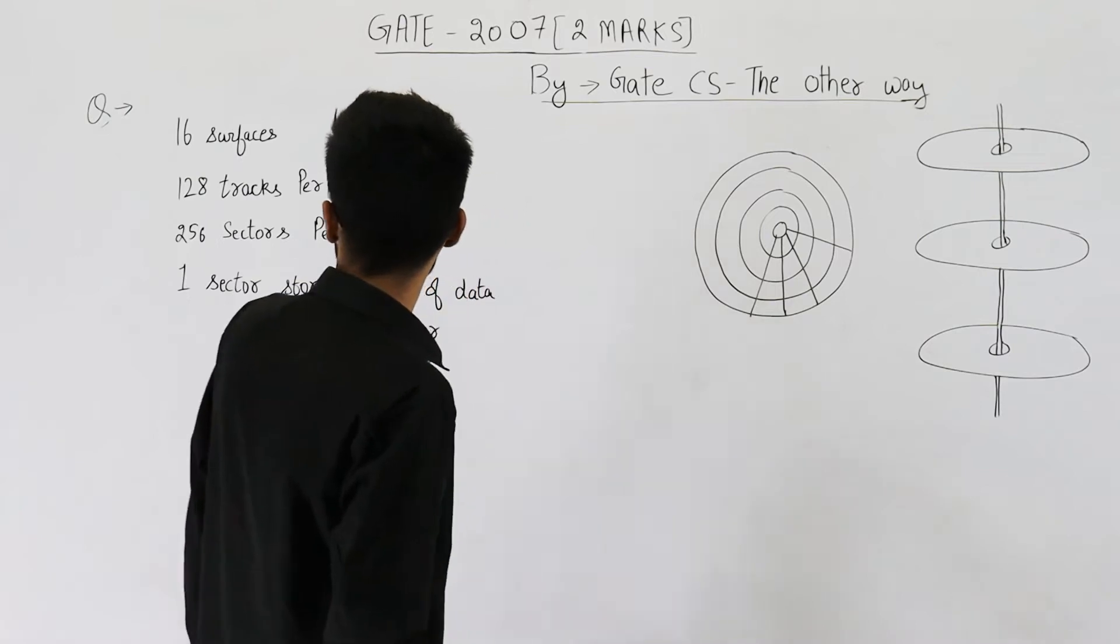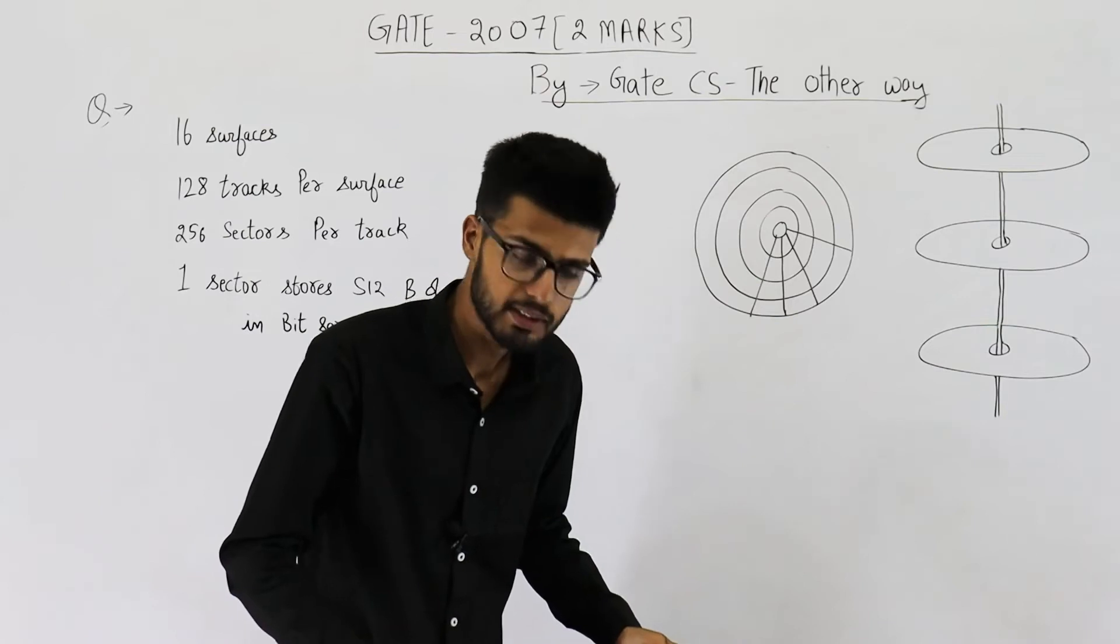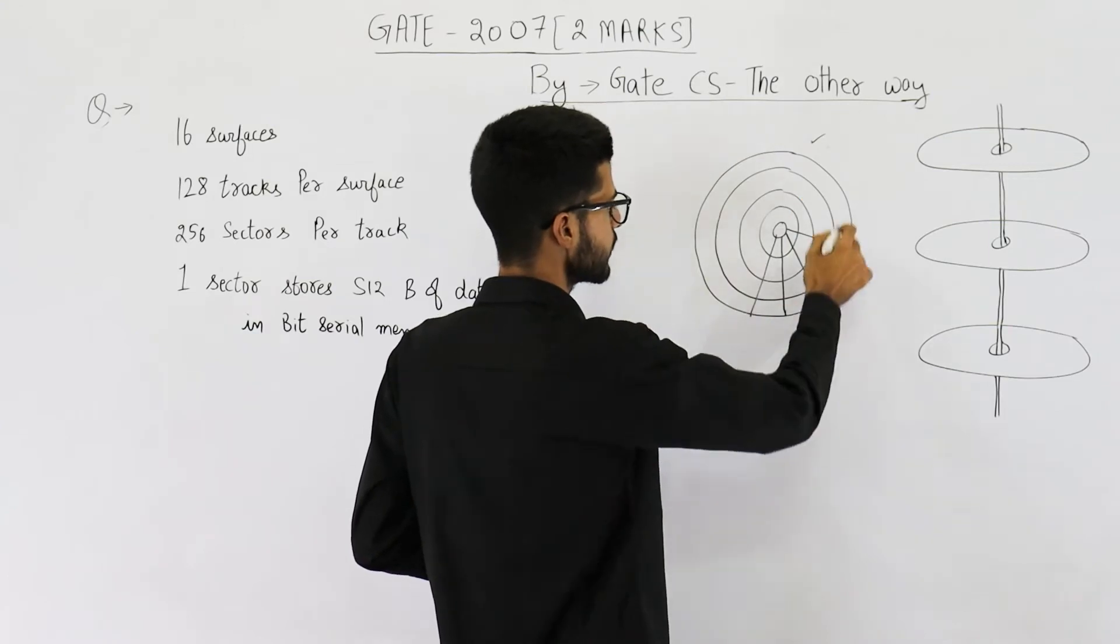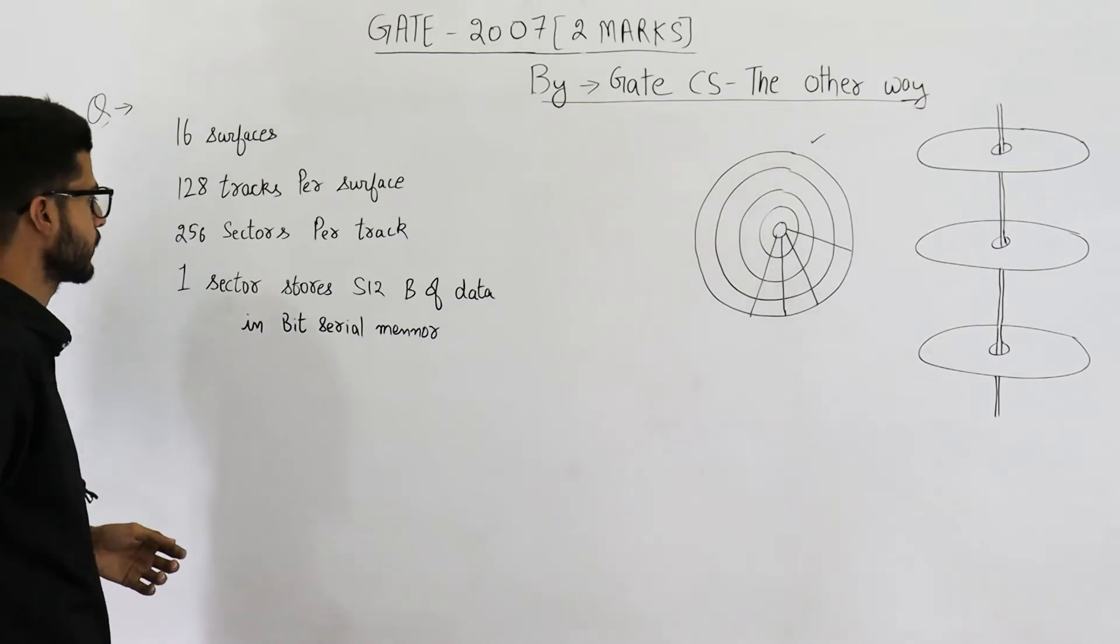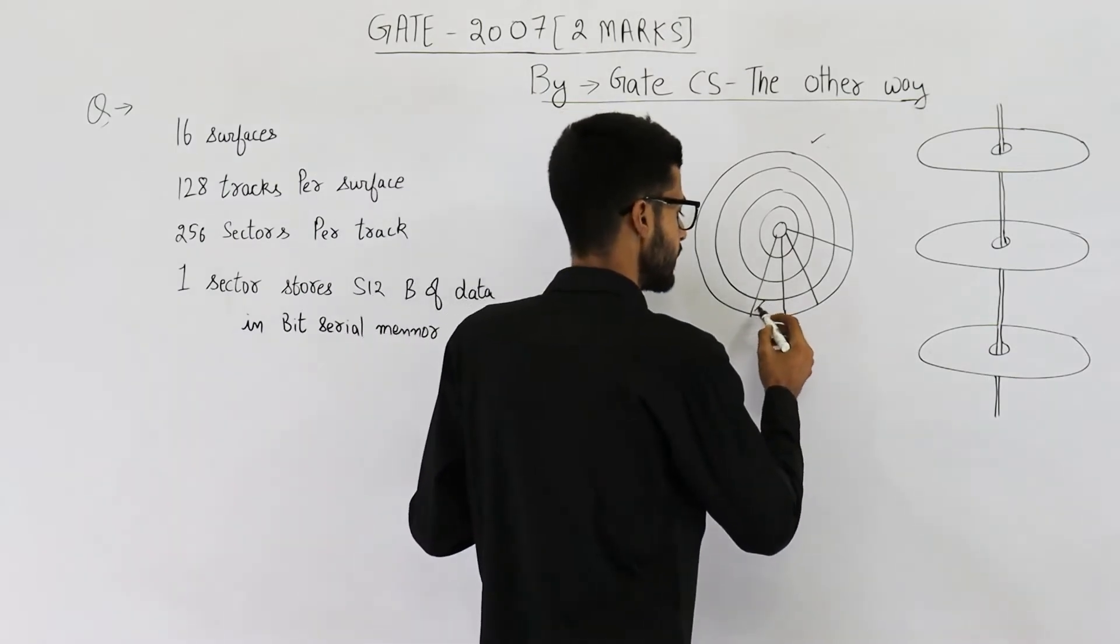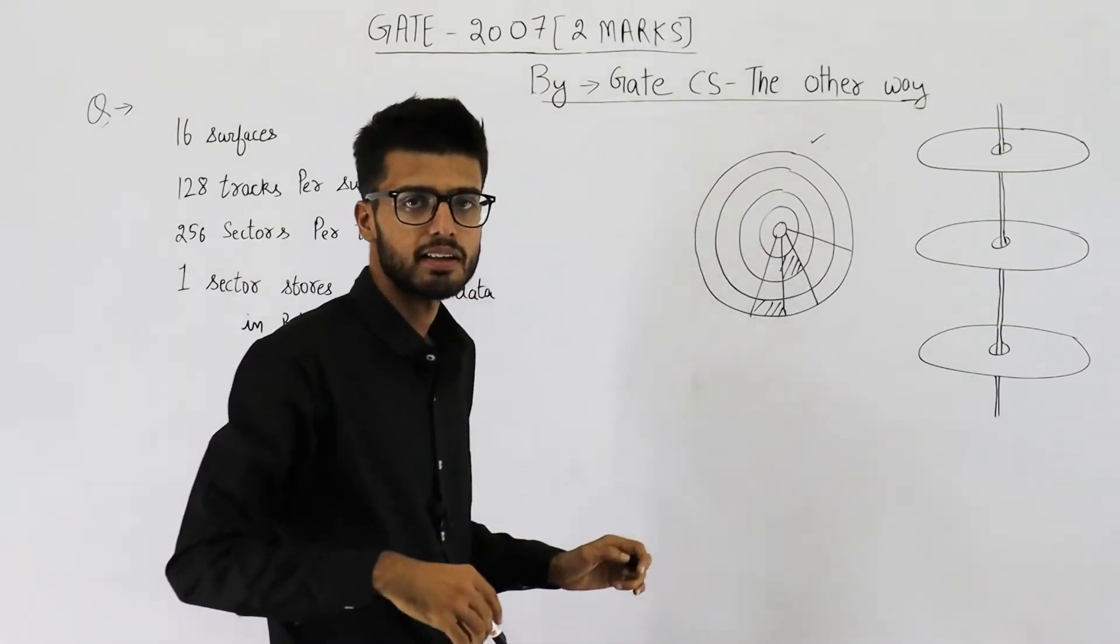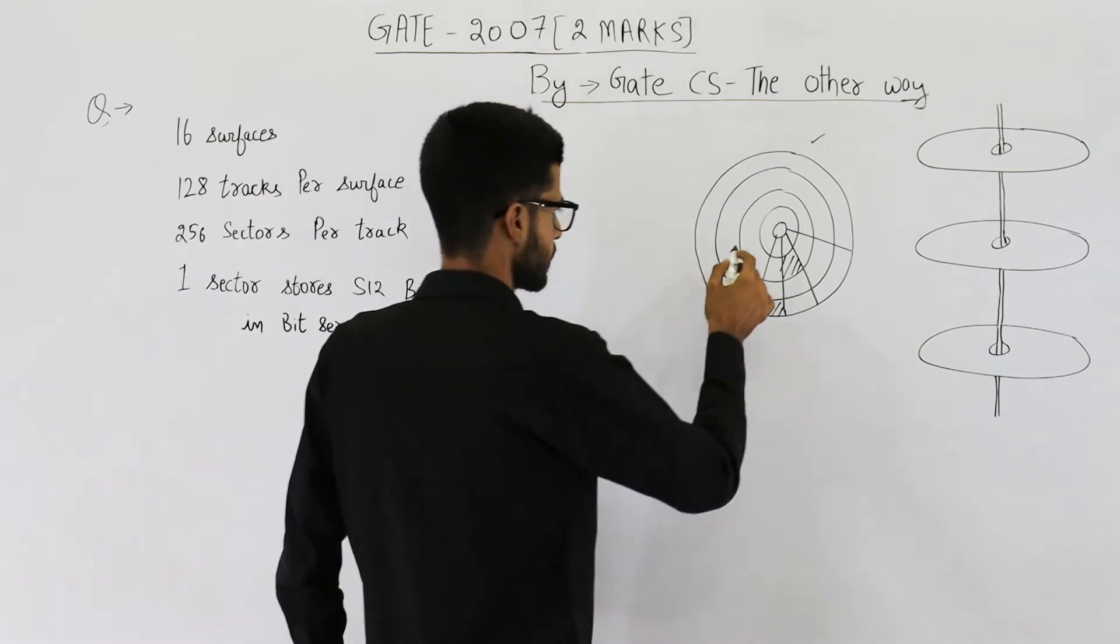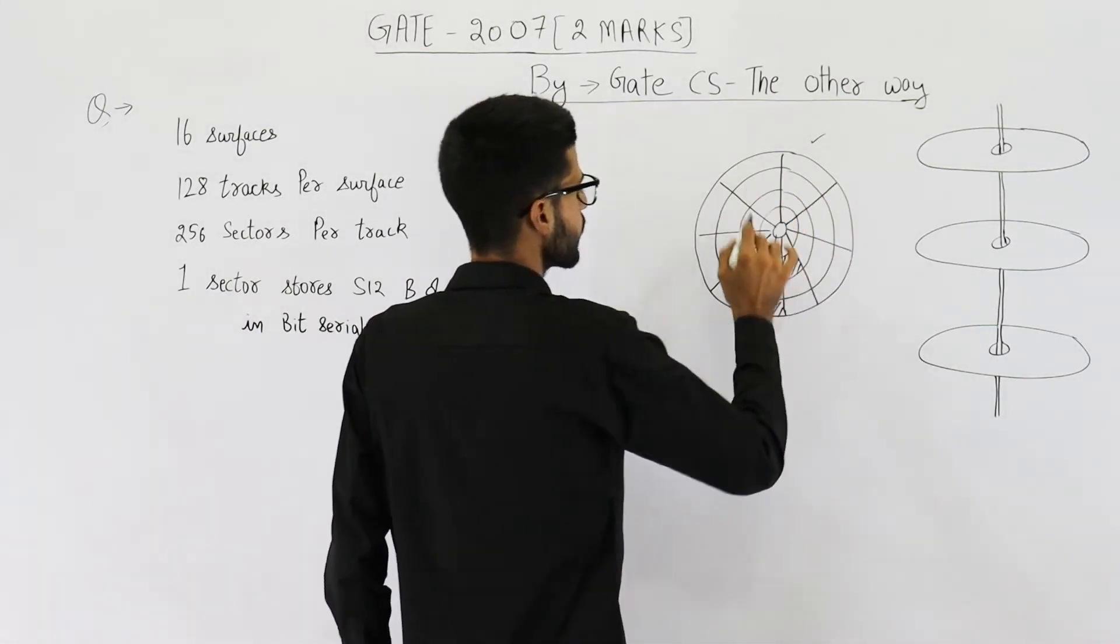So each surface has 128 tracks. I have shown one surface here - the top view of a surface. You can see these circular tracks, they are 128 in number. And each track has 256 sectors. These tracks are divided into sectors. Each of these tracks has 256 sectors. So there are a lot of sectors like this.